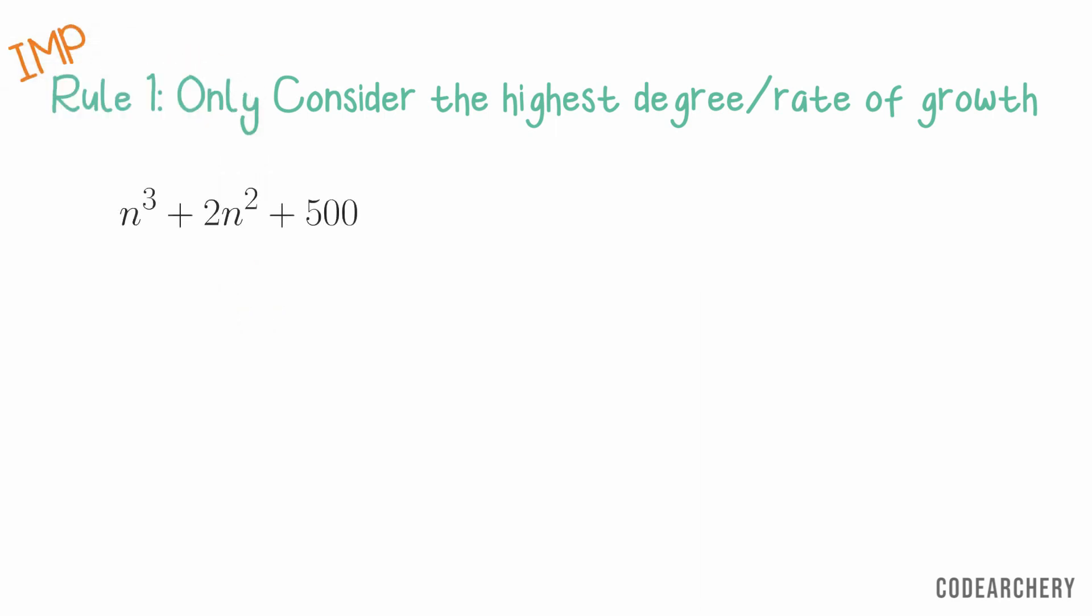So rule number 1, we always consider the highest rate of growth. This is the most important rule. For example, if an algorithm has a function f of x is equal to n cubed plus 2n square plus 500, we are gonna say that the time complexity of this algorithm is n cubed.